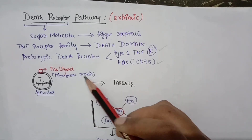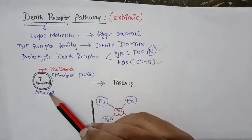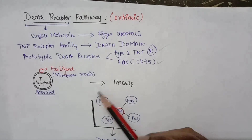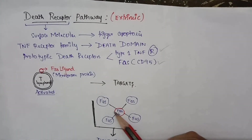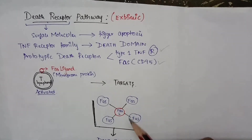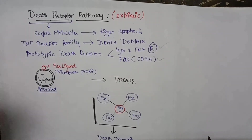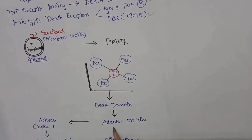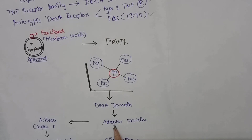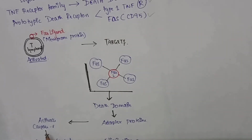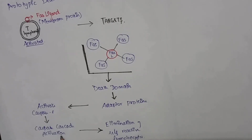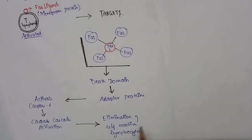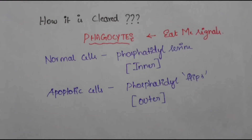The FAS ligand consists of membrane proteins present on activated T lymphocytes. On expressing its target, the FAS ligand helps in the cross-linking of FAS molecules, and hence there will be binding to adapter proteins via the death domain. This process causes activation of caspase 8, leading to caspase cascade activation and elimination of self-reactive lymphocytes.